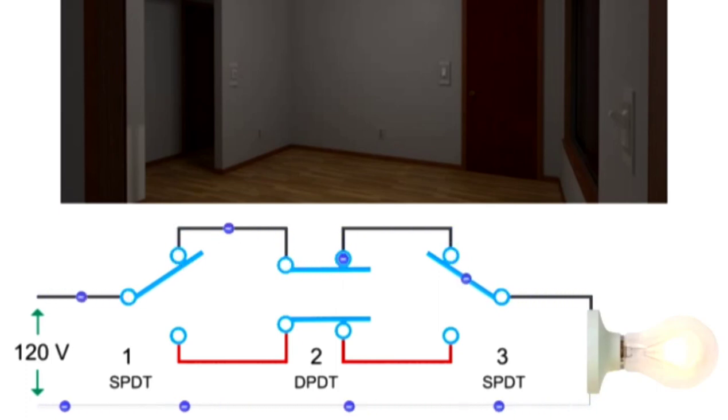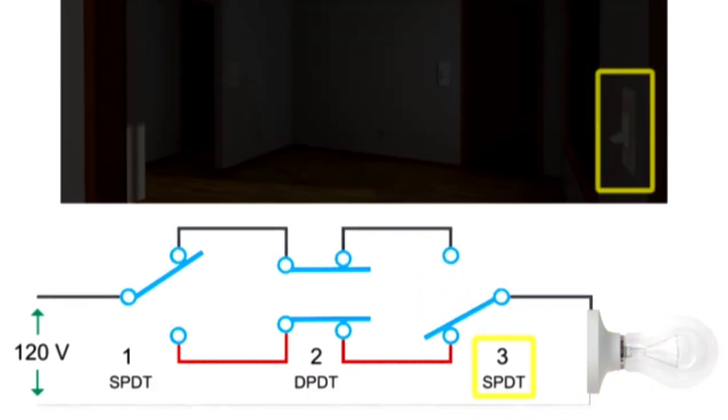If the position of switch two remains unchanged and switch one is up while switch three is down, the circuit will be broken and current will not flow through the circuit to light the bulb.